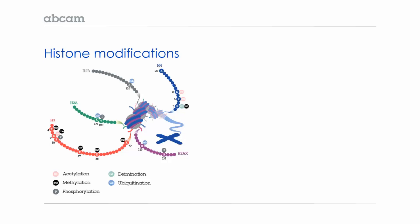Deimination occurs when an arginine residue is converted to a citrulline residue. Phosphorylation has roles in DNA repair, transcriptional regulation, and chromosome condensation, and ubiquitination appears to play a role in DNA repair.